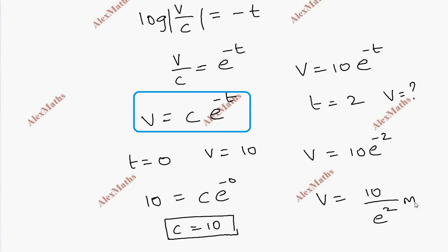v equals 10 by e squared meters per second. This is the solution.